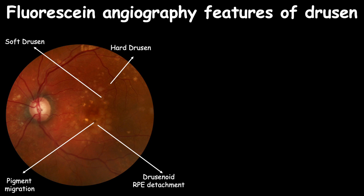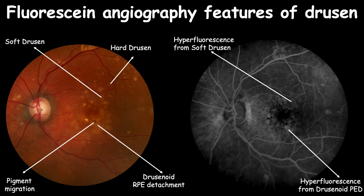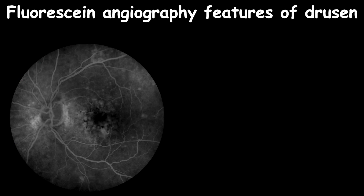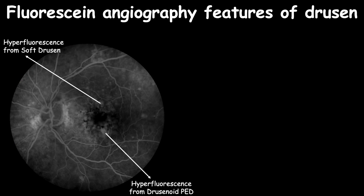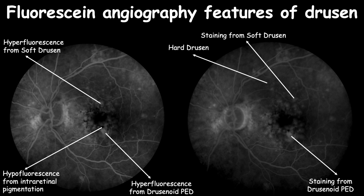The fluorescein angiogram shows hyperfluorescence of soft drusen and drusenoid RPE detachment in the early phase, where hyperfluorescence is maintained without increase in size in the mid-phase, with more prominent hypofluorescence due to intraretinal pigmentation. The late phase shows staining from both the RPE drusenoid detachment and soft drusen, along with hyperfluorescence from hard drusen and hypofluorescence due to intraretinal pigmentation.